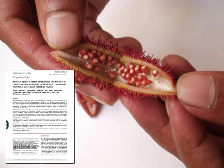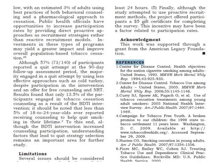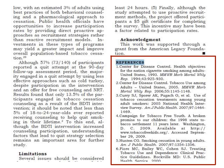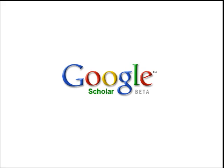Remember, even if you've found only one article, you've got a great start. Think of it as your seed article. Take the article you've found and look at the References section — these are the articles the authors read before writing their own article. The best way to find the full text of these articles is to use Google Scholar.